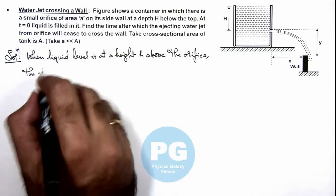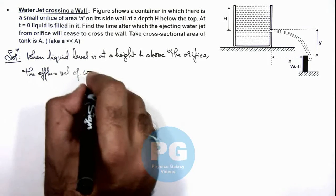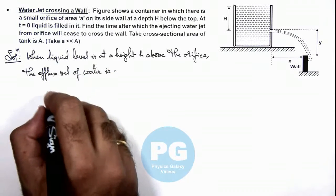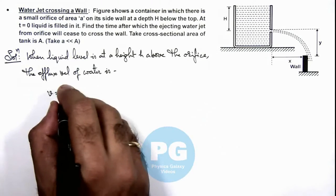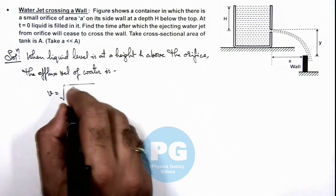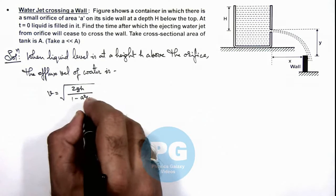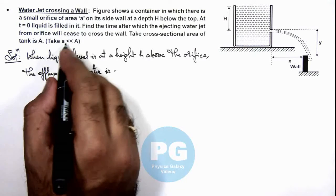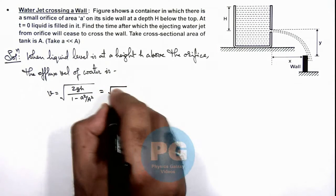The efflux velocity we can write by using Torricelli's theorem, we already studied earlier in concept videos, that is root(2gh) divided by [1 - a_y²/A_y²]. And as a_y is very small compared to A_y, then this can be approximated as root(2gh) only.